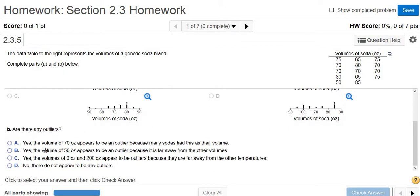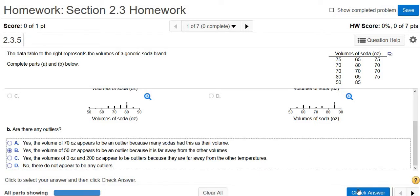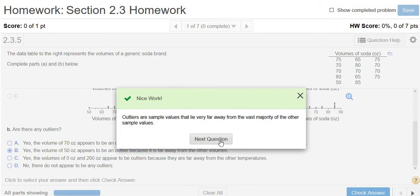So I would say yes, the volume of 50 ounces appears to be an outlier because it is far away from the other volumes. So let's go with B. Good stuff. I hope that made sense.